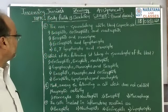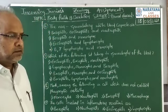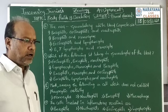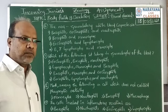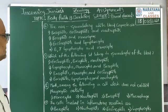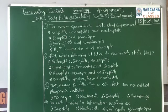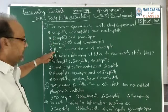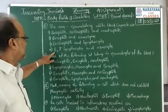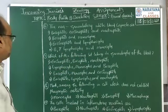Next question: the non-granular white blood corpuscles are — we all know that WBCs are classified into granular and non-granular, that is granulocytes and agranulocytes, on the basis of the presence or absence of granular cytoplasm. The options are: basophils, eosinophils, and neutrophils; basophils and monocytes; eosinophils and lymphocytes; or B and T lymphocytes and monocytes. The correct option is option number four.